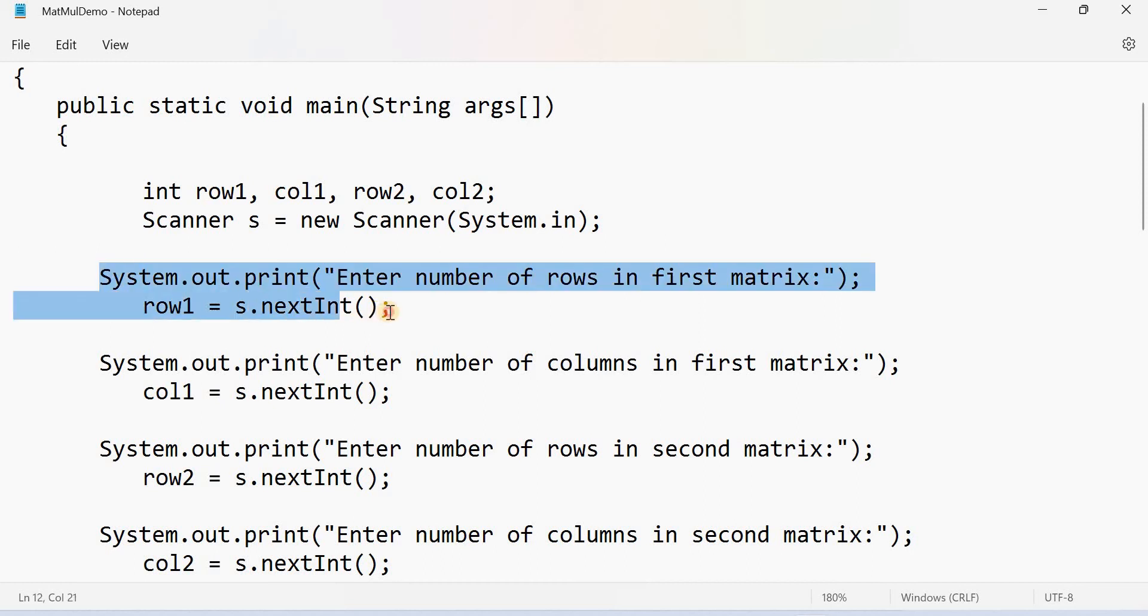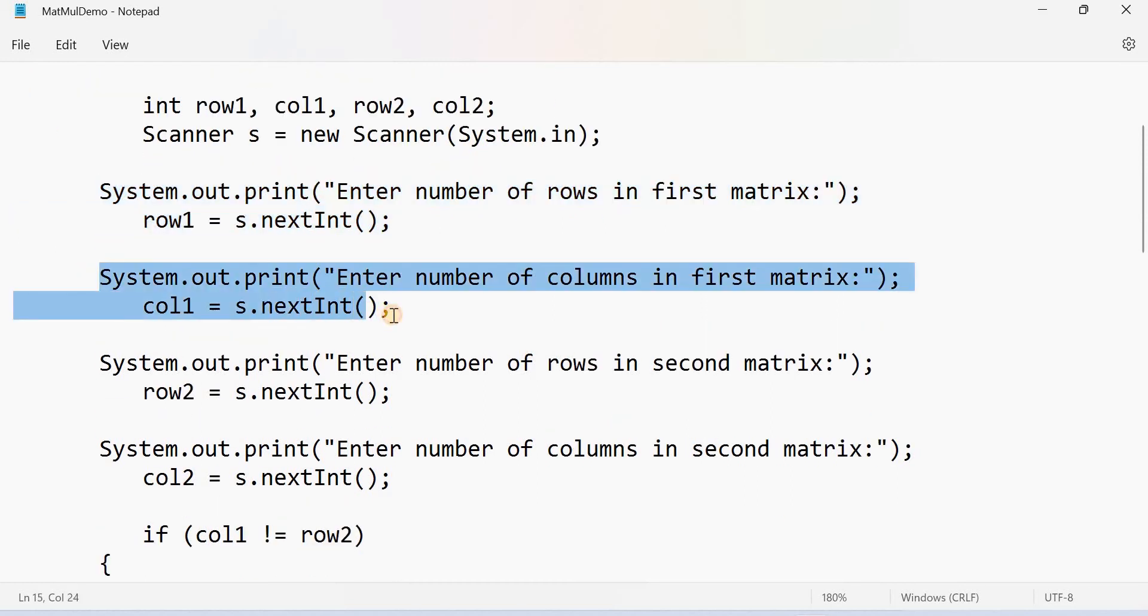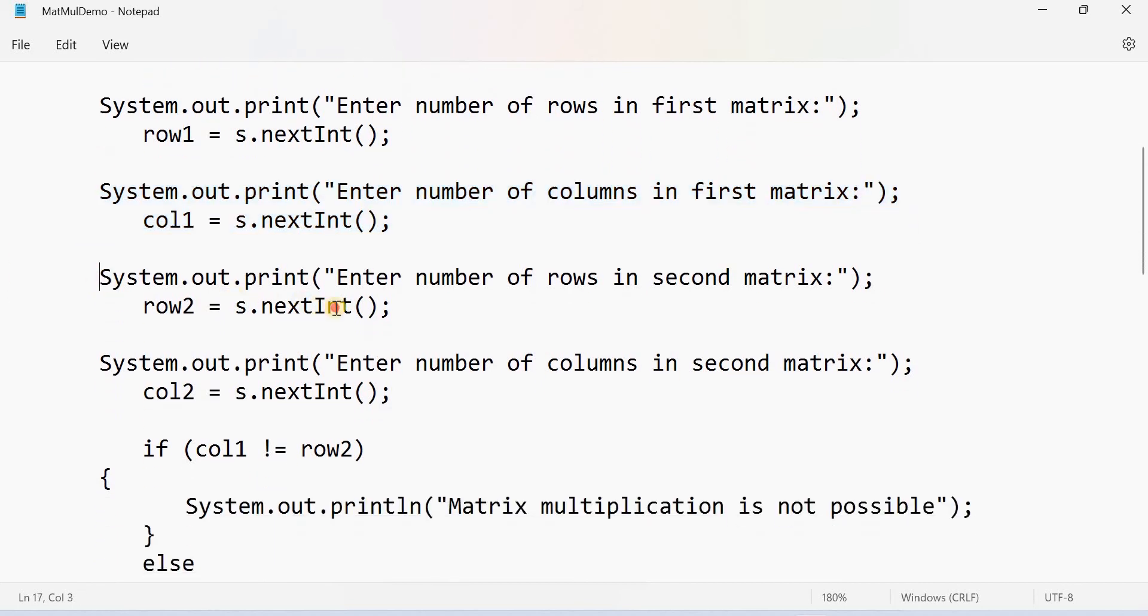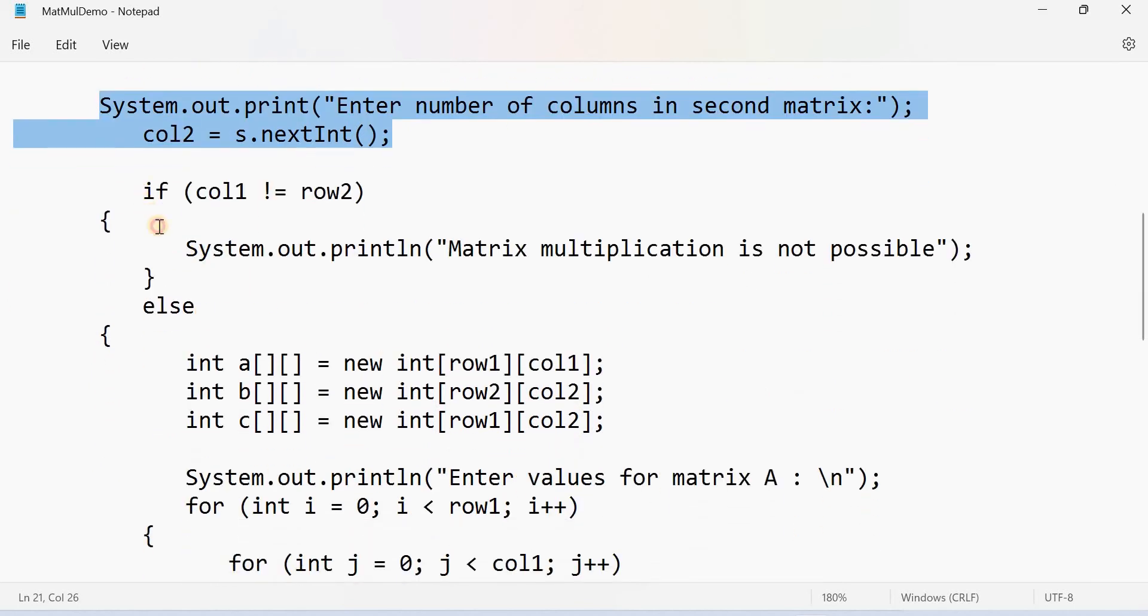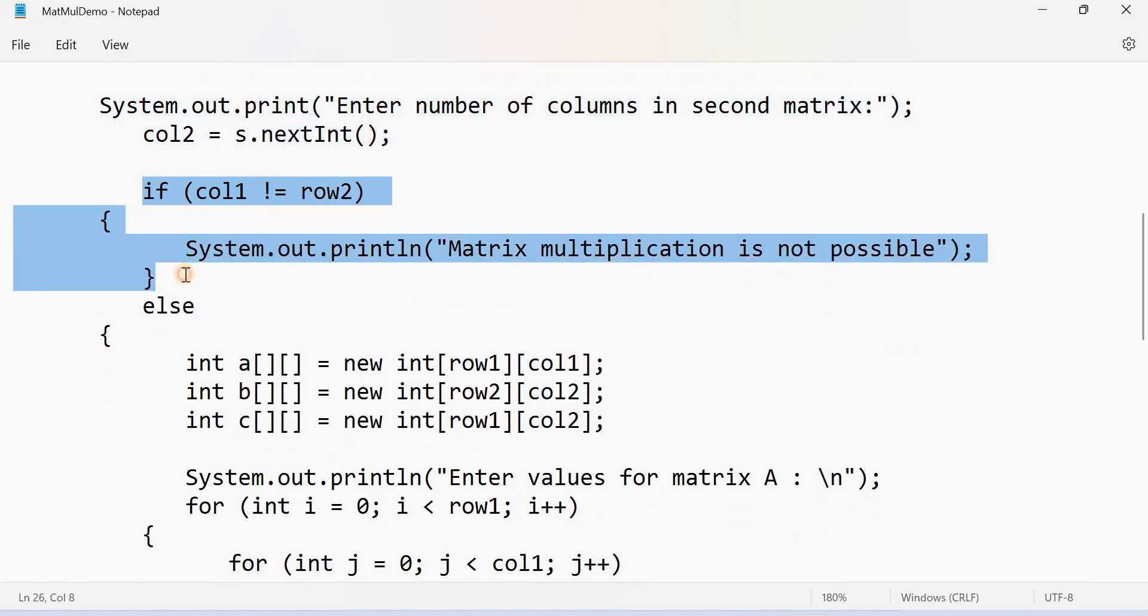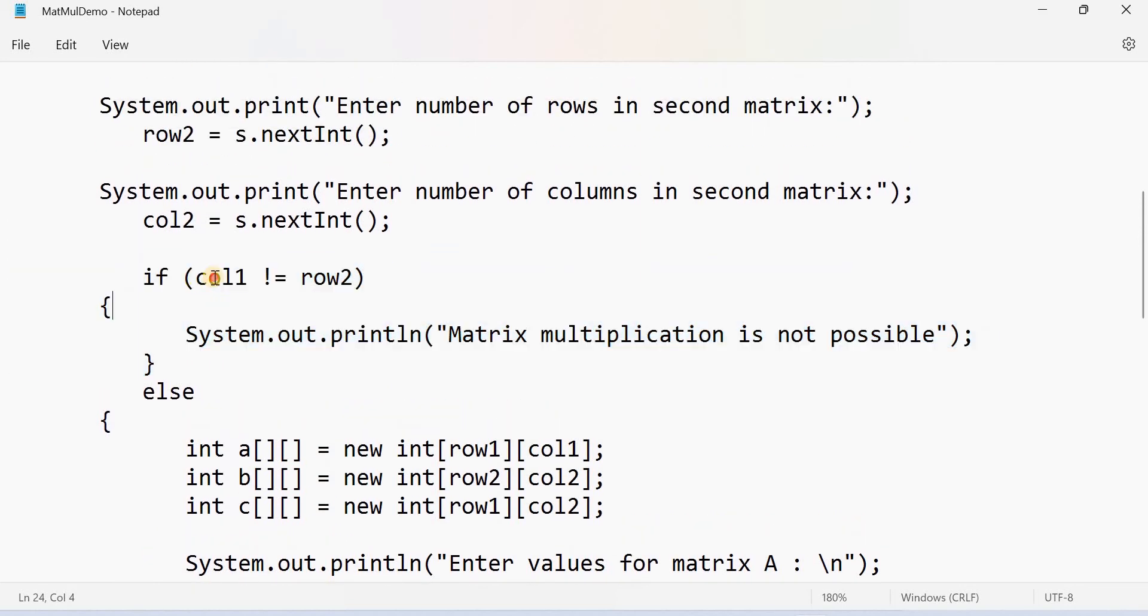First of all, read the rows of matrix 1 and read the columns of first matrix and read the rows of second matrix and read the columns of second matrix. As I told you, first of all we have to check whether matrix multiplication is possible or not. The condition is column 1 not equal to row 2, then directly print matrix multiplication is not possible.